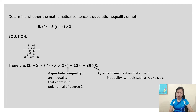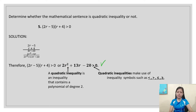So here is the explanation. A quadratic inequality is an inequality that contains a polynomial of degree 2. Since the polynomial has its degree of 2, it is quadratic. And since the symbol used is greater than — which is one of the quadratic inequality symbols — this equation is a quadratic inequality.